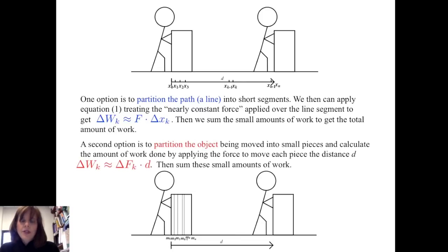A second option is to partition the object being moved into small pieces and calculate the amount of work done by applying the force to move each piece the distance d. So therefore, the small amount of work done, ΔWₖ, is approximately ΔFₖ times the distance. We then sum these small amounts of work.